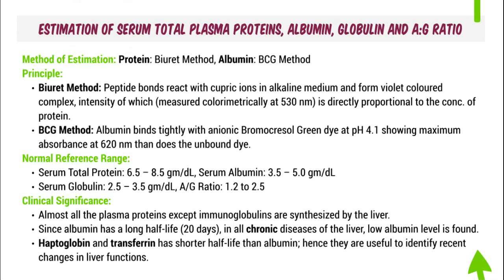Clinical significance: almost all plasma proteins except immunoglobulins are synthesized in the liver, so measuring them estimates the synthetic capacity of the liver. Albumin has a long half-life of 20 days — if reduced, liver disease is chronic. Haptoglobulin and transferrin have shorter half-lives; if these are reduced, the liver damage is acute. Reduced albumin with normal haptoglobulin and transferrin indicates chronic liver disease.